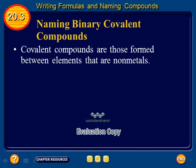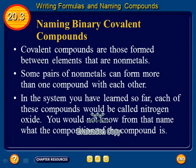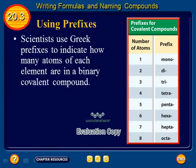Covalent compounds are those formed between elements that are nonmetals. Some pairs of nonmetals can form more than one compound with each other. In the system you've learned so far, each of these compounds would simply be called nitrogen oxide, and you would not know from that name what the composition of the compound is. Scientists use Greek prefixes to indicate how many atoms of each element are in a binary covalent compound. For example, if the number of atoms is 1, the prefix 'mono' is used.